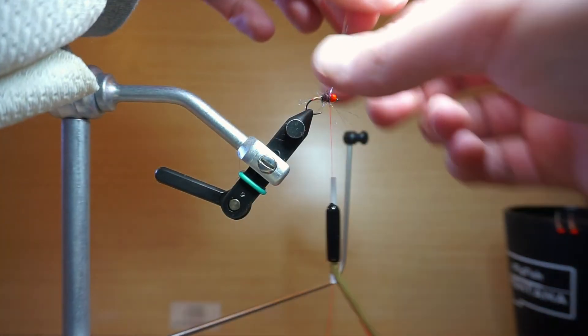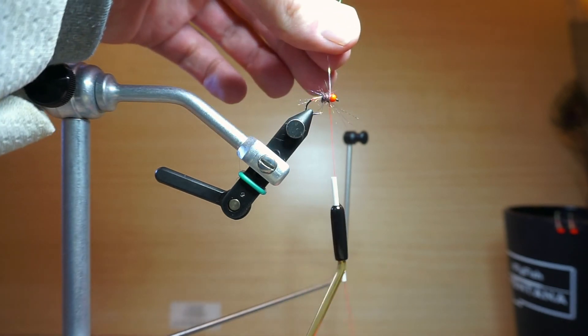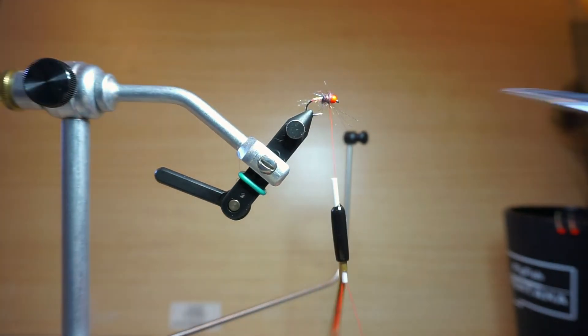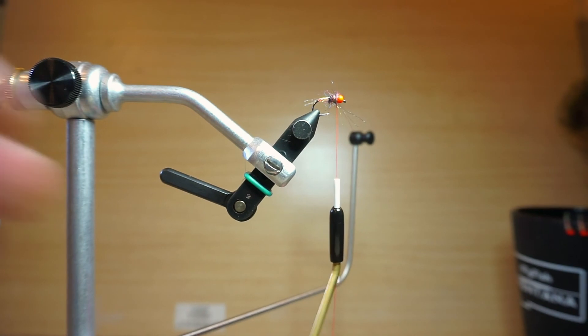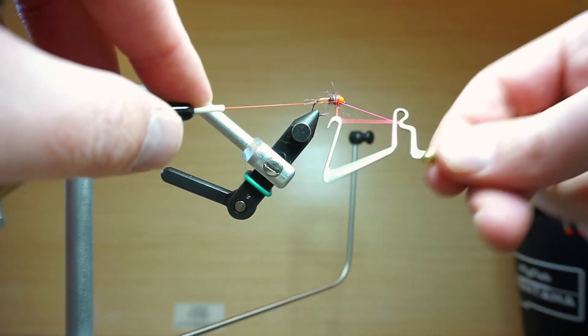And try to get my whip finisher here on the camera. And go ahead and put a couple whip finishes in there to finish off the fly. And you can always throw some head cement on there, give it a little bit more durability.